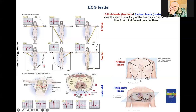In Goldberger's AVR, the two electrodes — left arm and left foot — combine against the electrode on the right arm. For AVL, the two electrodes — right arm and left foot — combine against the left arm electrode. For AVF, the two electrodes — right arm and left arm — combine against the left foot electrode.